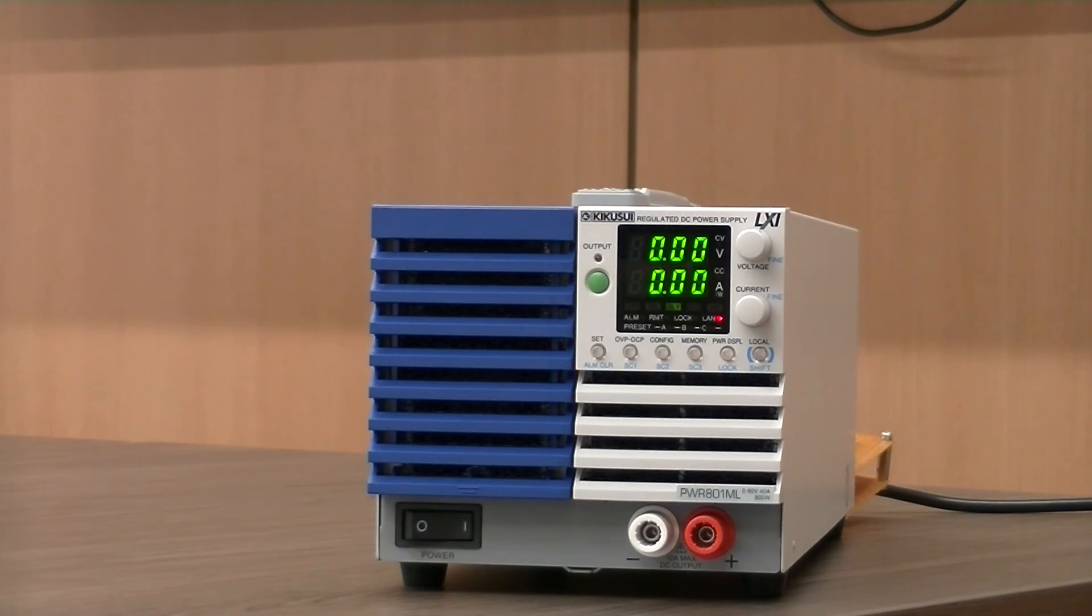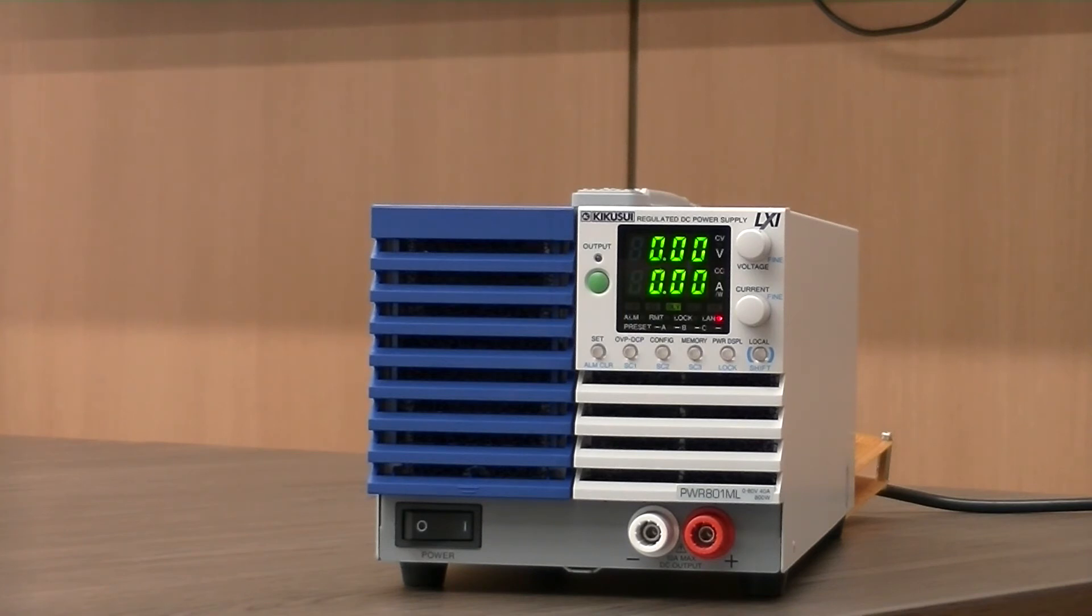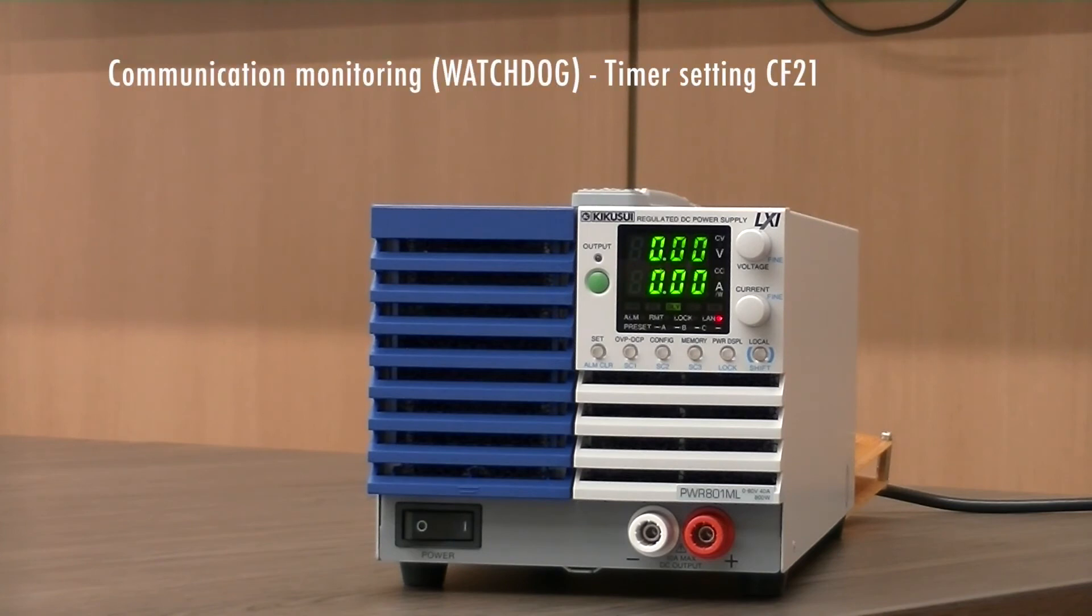One safety feature that we are often asked about is the watchdog protection. The purpose of the watchdog function is essentially to monitor the SCPI command's communication status and judge whether communication has stopped when there is no communication within the time period specified by the communication monitoring timer setting, which can be set via config 21.